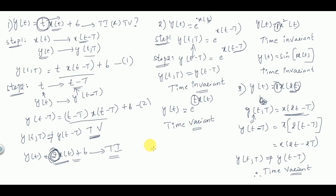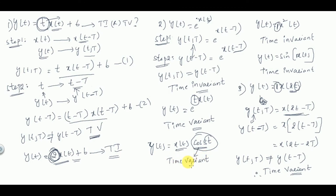For y(t) = x(t) · cos(3t), the input x(t) is multiplied by cos(3t), which is a function of t. Therefore the coefficient is a function of time, and the system is a time variant system. Time scaling is also time variant because you are scaling in time. This is how we determine whether a given system is time variant or time invariant.